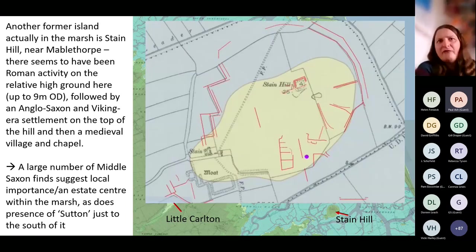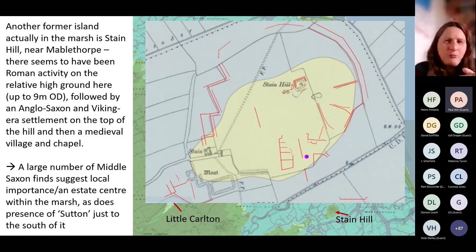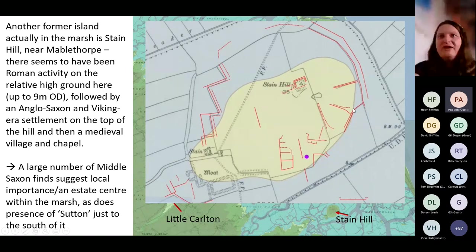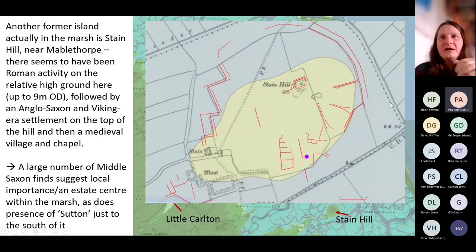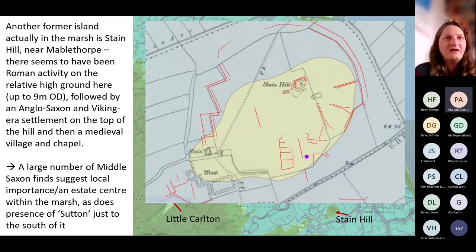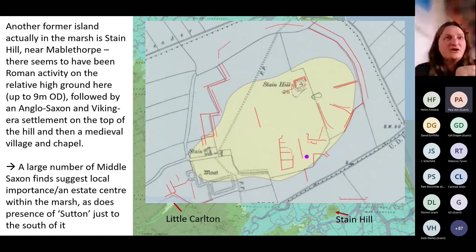I would suggest it's probably some kind of estate centre, particularly as there's a Sutton to its south — a directional name suggesting centrality for the place to its north. The LIDAR pushes the island edge north of where the British Geological Society mapped it, and the crop marks I can see on Google Maps support this. It looks like there's water management in the medieval period here, and it does become a medieval village with a chapel that continues to function into the 15th century.